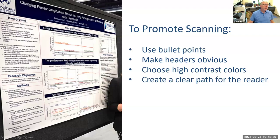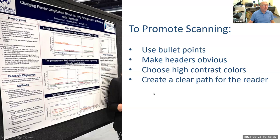To promote scanning — which is different from contrast and legibility — you guide the eye and give readers visual cues. You can use bullet points to break up large blocks of text so viewers can more easily understand and digest key points. Make headers very obvious; even a simple large font with a rectangle around it achieves the purpose. Then create a clear path for the reader with vertical breaks to separate columns — column one, column two, column three.